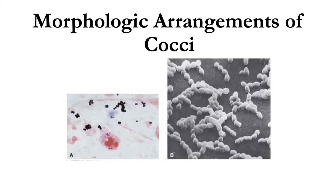In the first picture, you can see a photomicrograph of gram-stained Staphylococcus aureus cells illustrating gram-positive (blue to purple) cocci in grape-like clusters, along with a pink-stained white blood cell. On the second picture, that is a scanning electron micrograph of Streptococcus mutans illustrating cocci in chains. This causes dental caries.